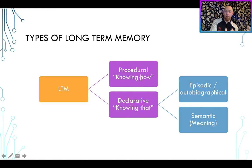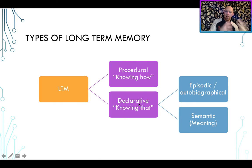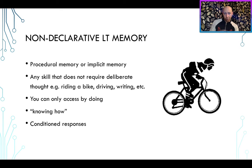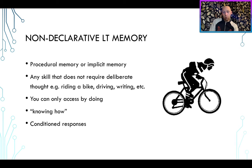Procedural memory is sometimes called implicit or non-declarative. It is information that you don't have conscious access to. The classic example is something like riding a bike — it's a non-declarative long-term memory. You can't access the memory of riding a bike just by thinking about it; you have to get on a bike, start pedalling, and then you remember how to do it. You could go years without performing a procedural task and suddenly pick it back up relatively quickly.